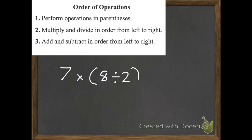Here's our first example. We have seven times parentheses eight divided by two. The first thing we're going to do is anything in parentheses. As I look down there, we do have one thing in parentheses: eight divided by two. So we're going to do that first. Even though it's on the right side, we always do our parentheses first. So what is eight divided by two? It is four.